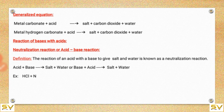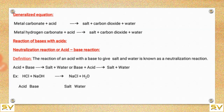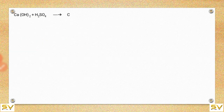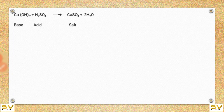Example: HCl + NaOH gives NaCl + H2O. Here HCl is the acid, NaOH is the base, NaCl is the salt, and H2O is water. One more example: Ca(OH)2 + H2SO4 gives CaSO4 + 2H2O. Ca(OH)2 is the base, H2SO4 is the acid, CaSO4 is the salt, and H2O is water.